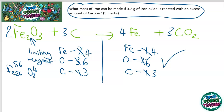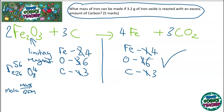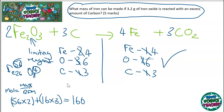Now I've balanced the equation, I need to calculate the moles of iron oxide I have. To do that, I use the relative formula mass, since moles equals mass over RFM. The RFM of iron oxide equals 56 times 2 plus 16 times 3 — you can see that from the formula: 2 iron with mass 56, and 3 oxygen with mass 16. That calculation equals 160. So the moles of iron oxide equals 3.2 grams divided by 160, which equals 0.02 moles.